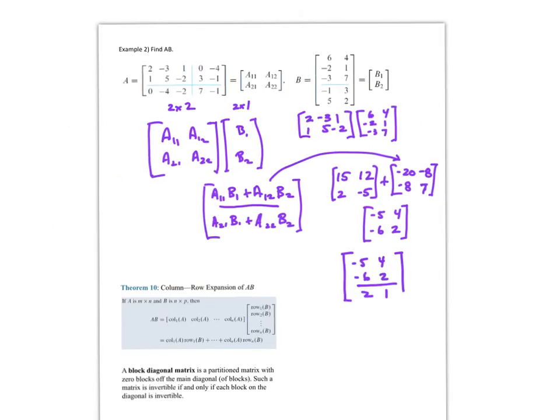So here's another example. Find AB. So I give you the matrix A, which is a 3 by 5, and I'm going to partition it into these chunks. So I'm going to end up with a 2 by 3, 2 by 2, 1 by 3, and a 1 by 2.